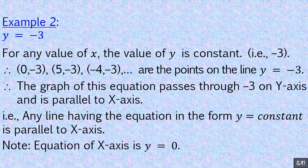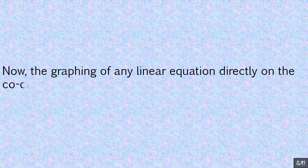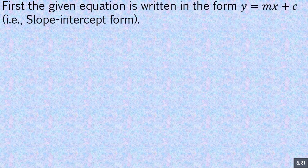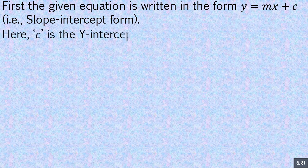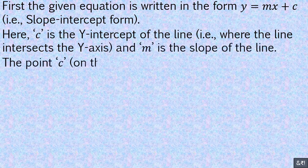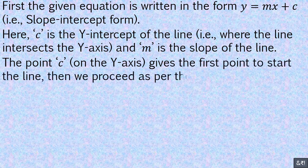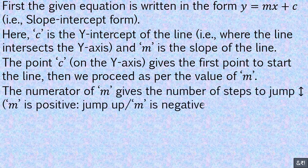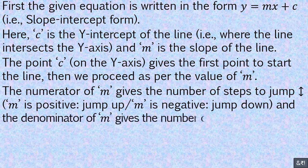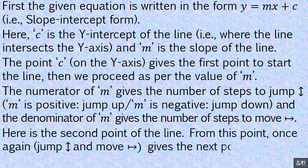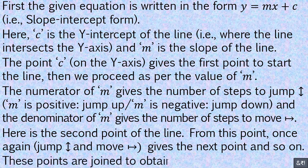Now, the graphing of any linear equation directly on the coordinate plane using the jump and move method — that is, without using tabular data. First, the given equation is written in the form y equals mx plus c, that is, slope-intercept form. Here, c is the y-intercept — where the line intersects the y-axis — and m is the slope. The point c on the y-axis gives the first point to start the line. Then we proceed as per the value of m: the numerator of m gives the number of steps to jump (positive m means jump up; negative m means jump down), and the denominator gives the number of steps to move. This gives the second point. From that point, jump and move again for the next point, and so on. These points are joined to obtain the required line.